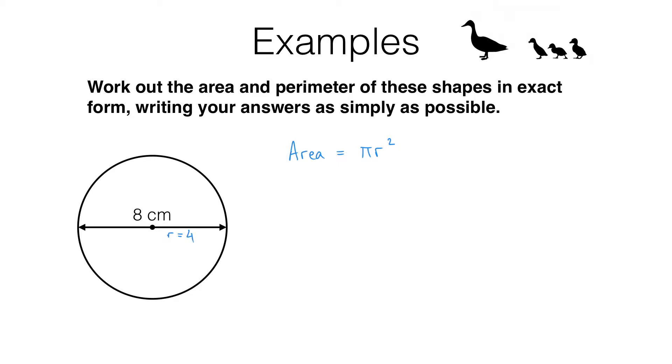In this circle the diameter is 8 centimeters, which means the radius is half of that, it's just 4 centimeters. So the area is going to be pi times 4 squared, which is pi times 16, and I'm just going to write that as 16 pi. That answer is in exact form.